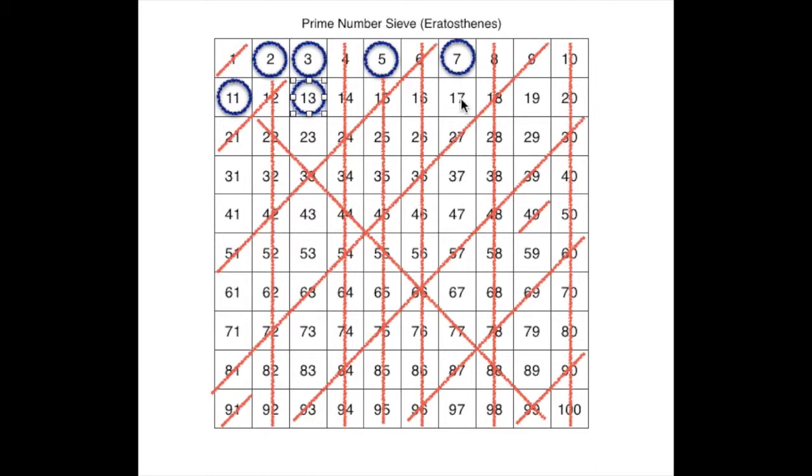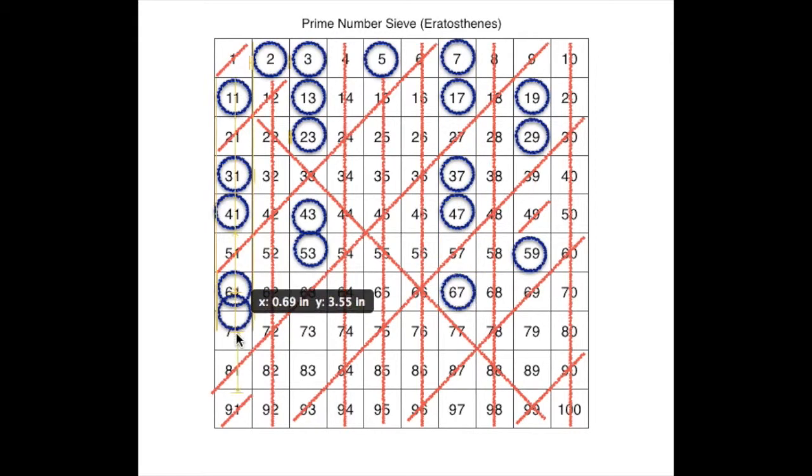So 17. You know what? The same thing is true for 17. We found all the multiples of 17 that are on this chart because we crossed them off when we crossed off all the multiples of these other numbers. So as it happens, all the rest of the numbers that are open are primes. Let's put a circle around them. And that is what we mean by a prime number sieve or the sieve of Eratosthenes.